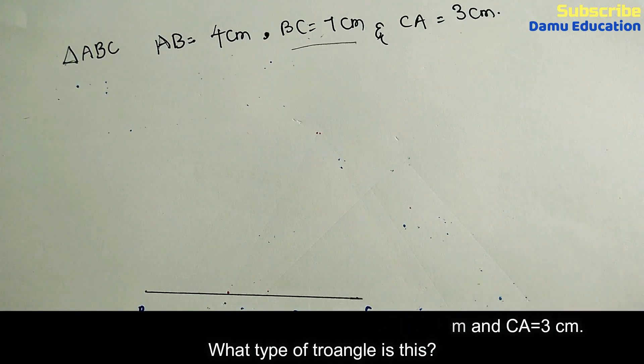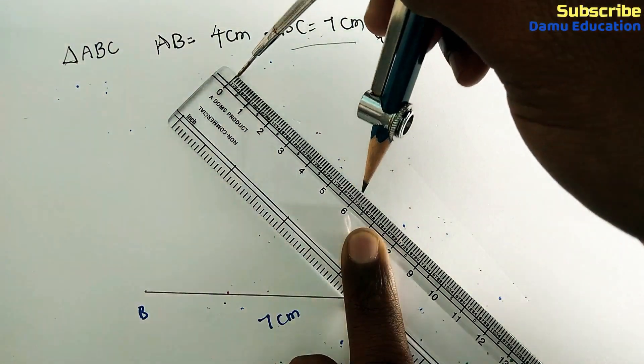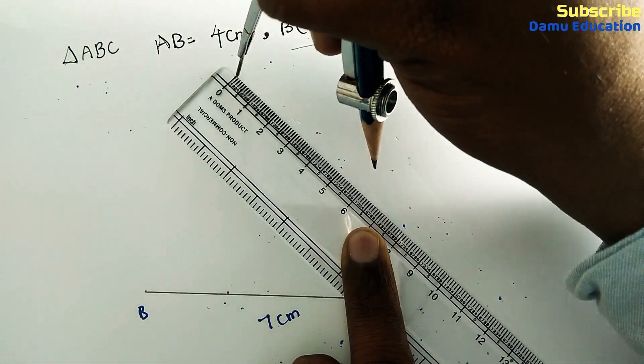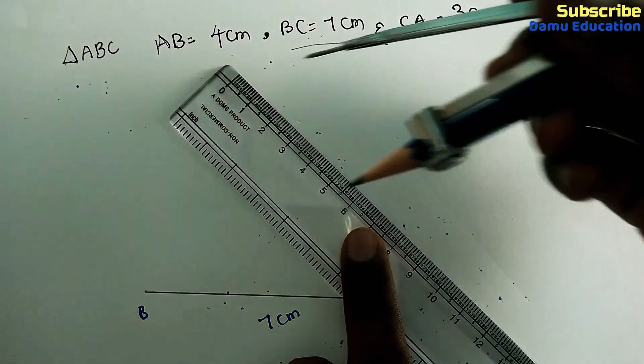Now AB equals 4 centimeters. With B as the center, draw an arc with 4 centimeter radius. First, place the needle like this and make sure that you go up to 4.